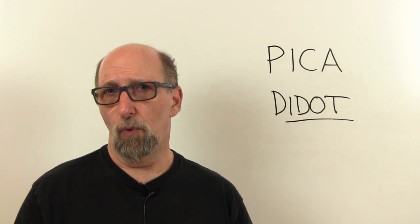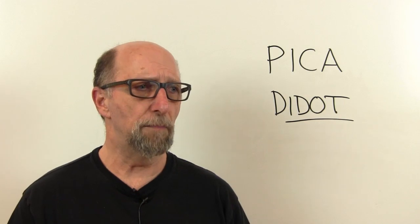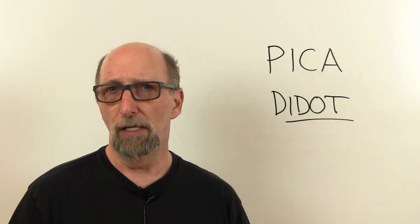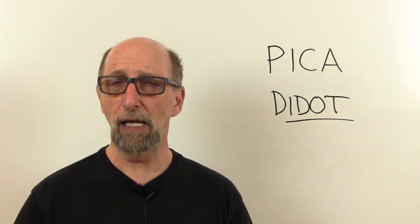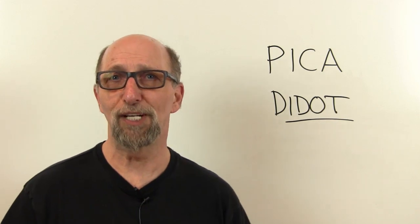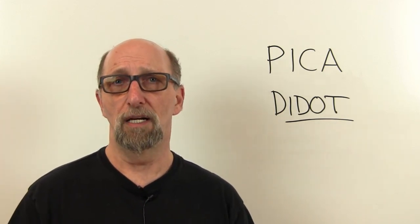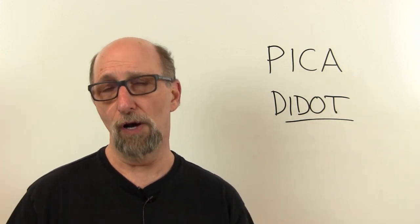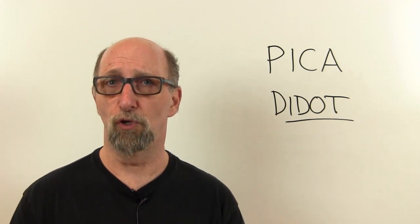So what is the Pica system? When Adobe came along, they said, 'We've got a measurement system that's a little less than a sixth of an inch, but that doesn't really help us. We need something more predictable.' So they did what you could do if you invented your own page description language—they changed the size of the Pica. They made the Pica exactly a sixth of an inch. So now if you multiply six Picas, you'll get exactly an inch, which is much more helpful.